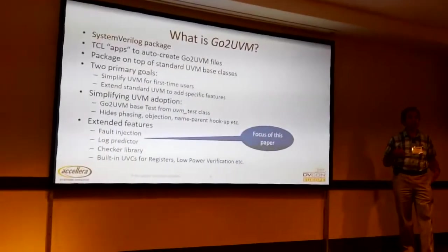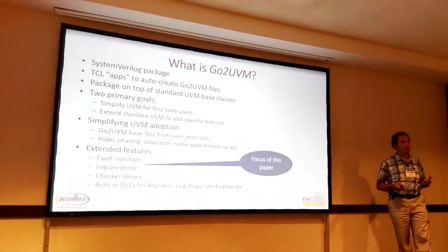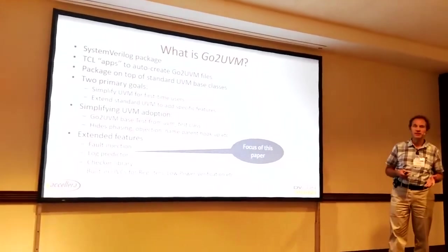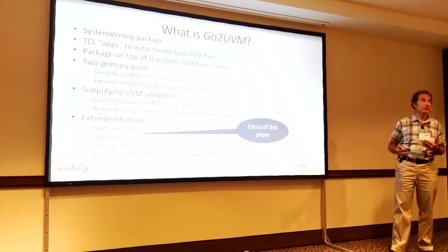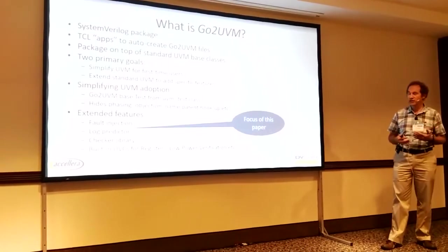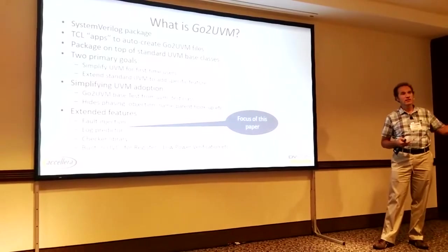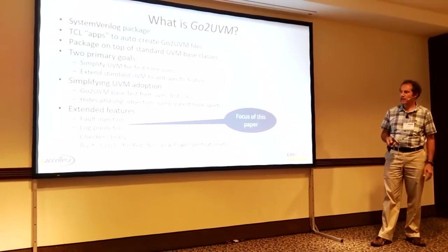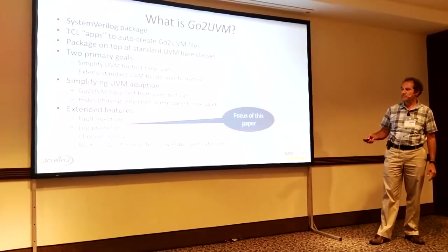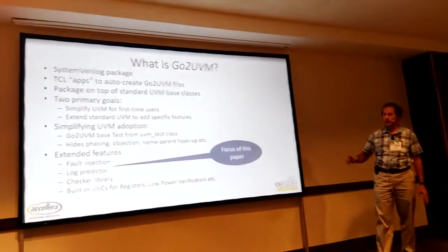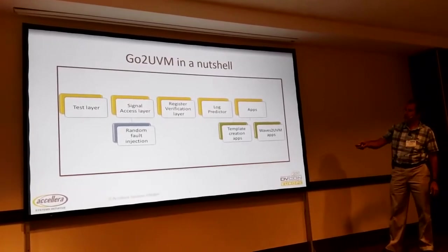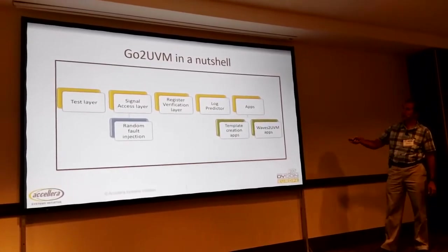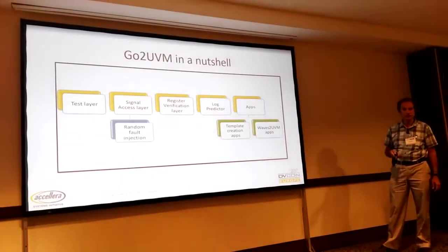Some of the extended features that have been added are the ability to inject faults into different locations in your design, so you can mimic what happens if you have random faults occurring inside your automotive system. When you start injecting faults, you need something that allows you to predict what the log file will be, so you can still do checking — because if you're adding faults in, you're getting a different result out of your system and you need a way to accommodate that. There's also a library of checkers and different UVM verification components for registers, low power, etc. I'm going to mainly focus on the test layer, signal access layer, and log predictor data.